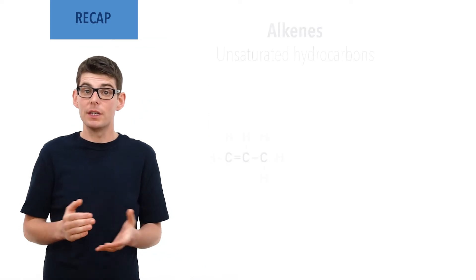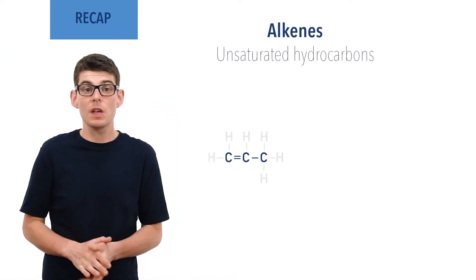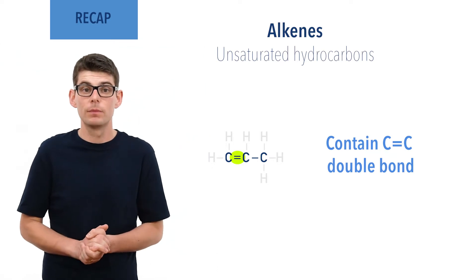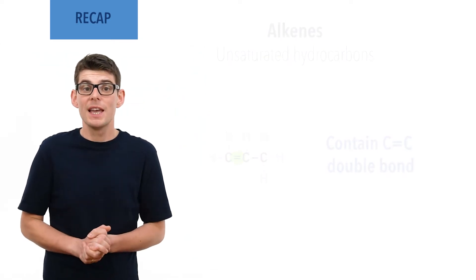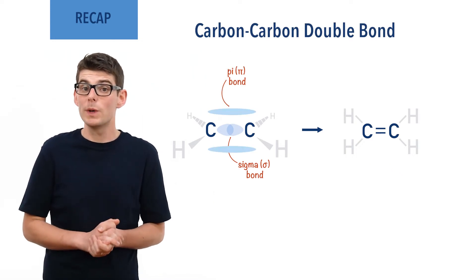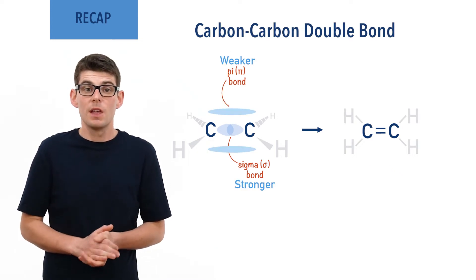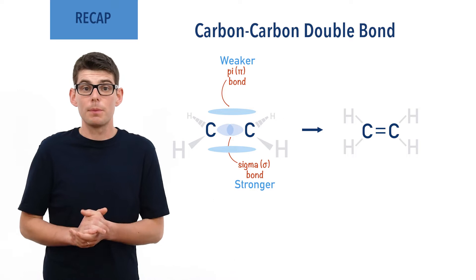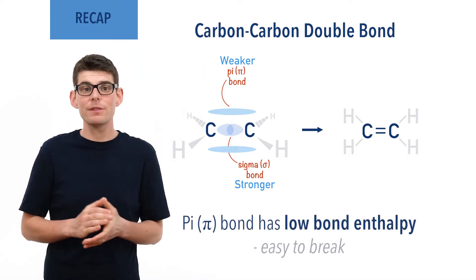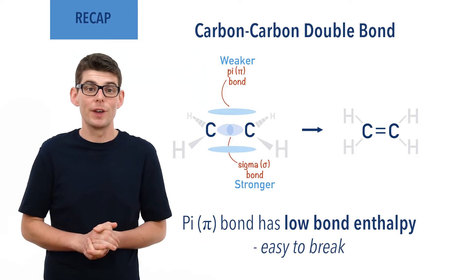Before we talk in detail about the reaction, there are a few essential ideas you need to be comfortable with. Alkenes are unsaturated hydrocarbons that have a carbon-carbon double bond in their carbon chain. The carbon-carbon double bond is made up of a sigma bond and pi bond, with the pi bond being weaker than the sigma bond. This weaker pi bond is quite easy to break as it has a low bond enthalpy, and this gives alkenes a relatively high reactivity.